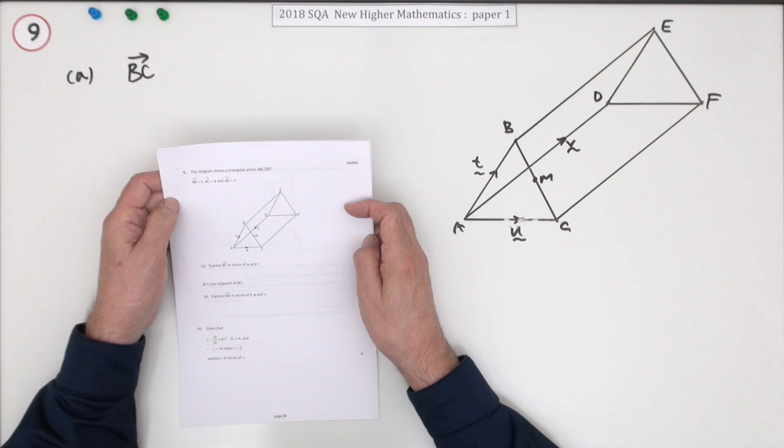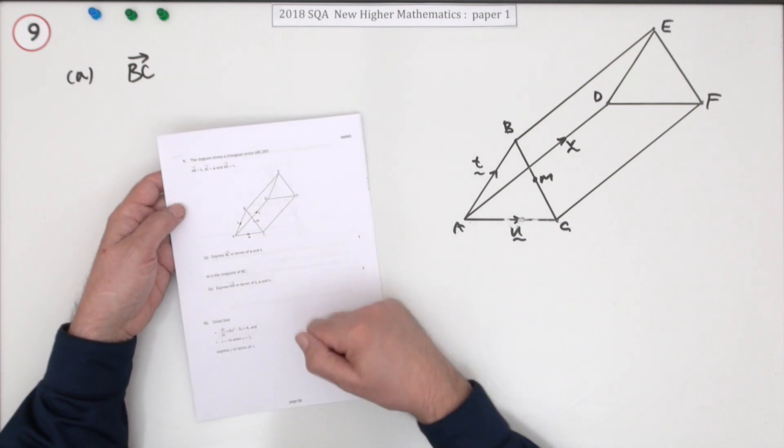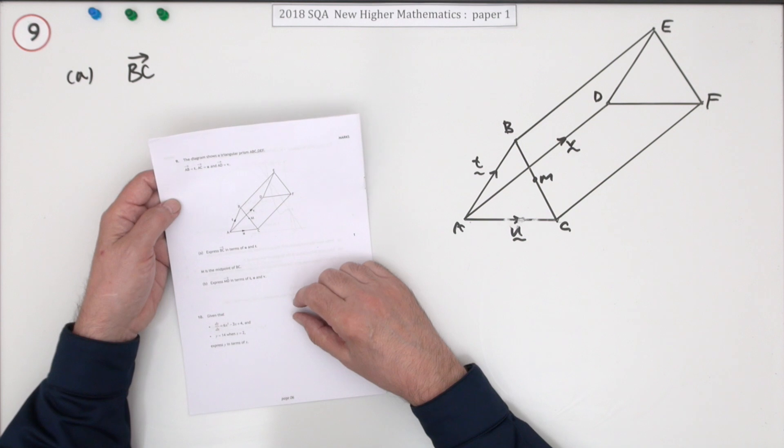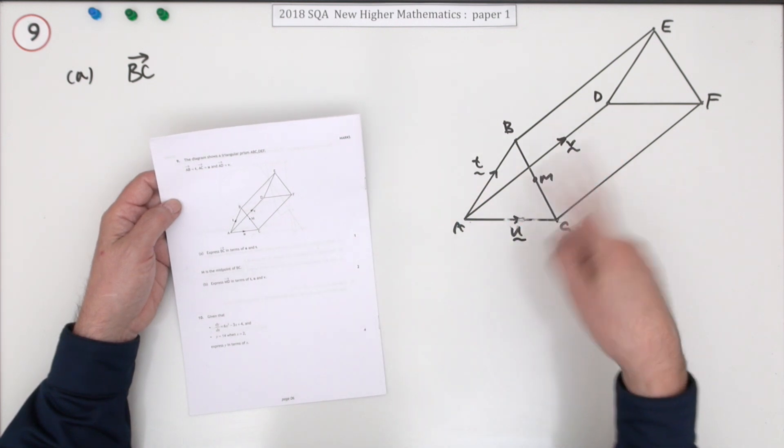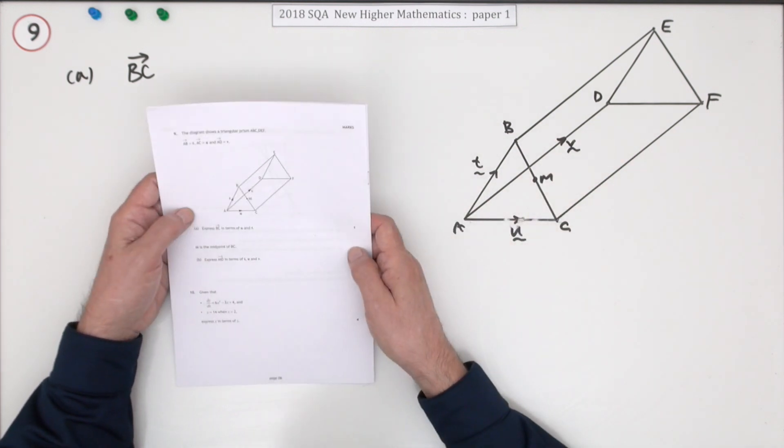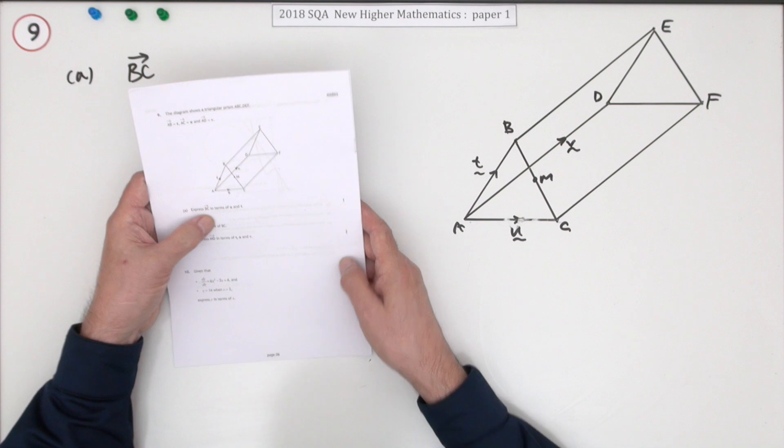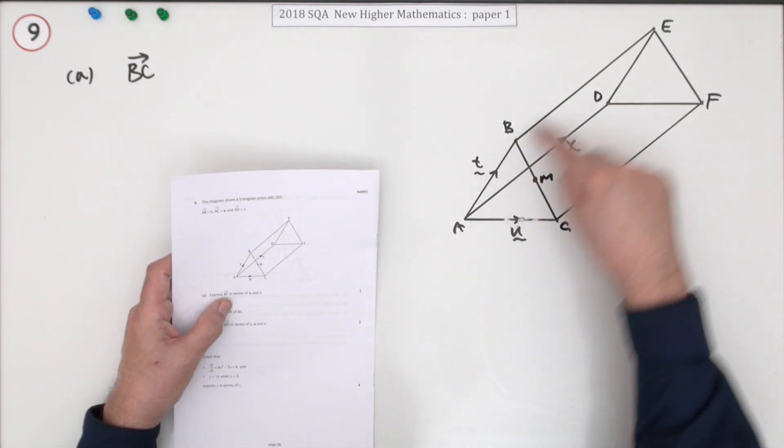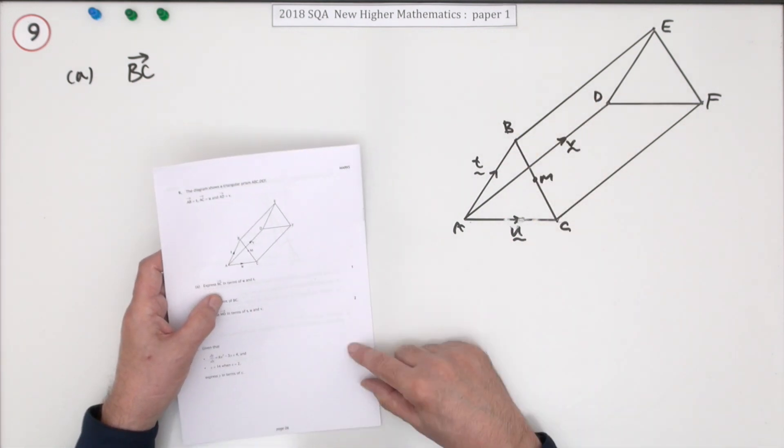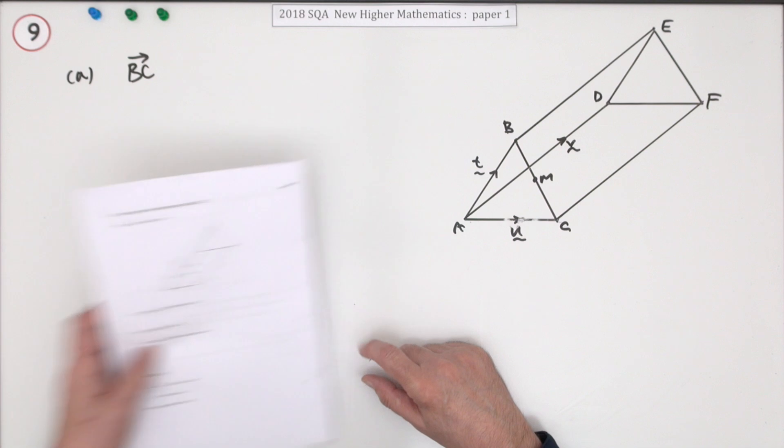Number nine then from the 2018 Higher Maths Paper 1, just a three-bar question on vectors. You've got this diagram here, and it looks like you've just got to travel around this framework to express, first of all, BC in terms of U and T.